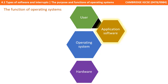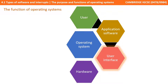The user doesn't tend to interact directly with the hardware, but instead they use application software such as word processors, spreadsheets, or graphics programs in order to accomplish a given task. It's the role of the operating system to provide a platform on which that application software can run. Application software today usually involves a common user interface, so the user is interacting with the application software in a familiar and friendly way. The operating system provides a platform for those applications to run, and also provides its own user interface experience in addition to the application software.